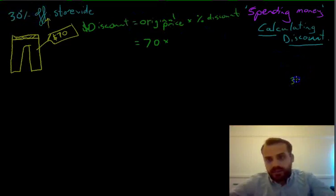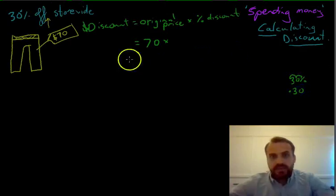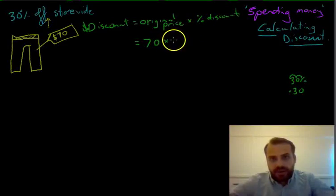So remember, 30% as a decimal is the same as 0.30. So when we multiply by our percentage, we use the percentage as a decimal, not as a percentage. So it's going to be times 0.30.